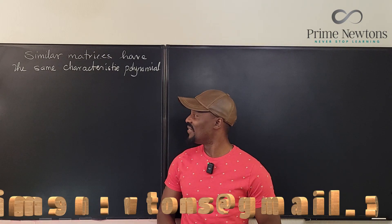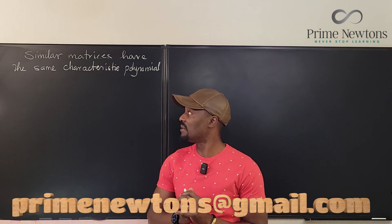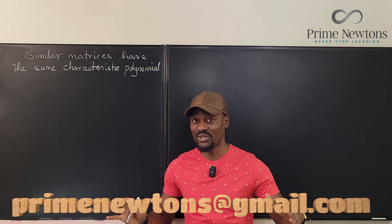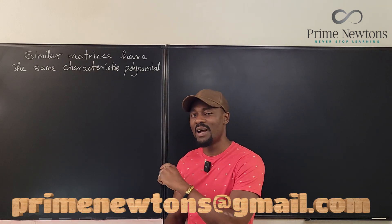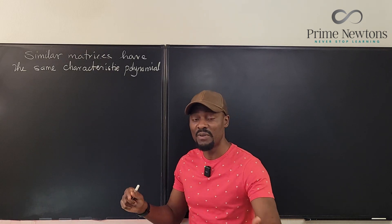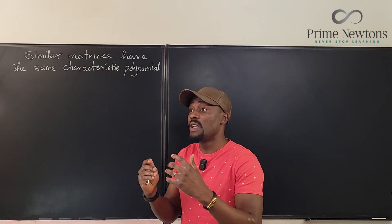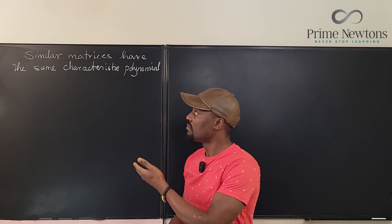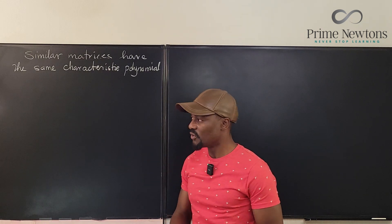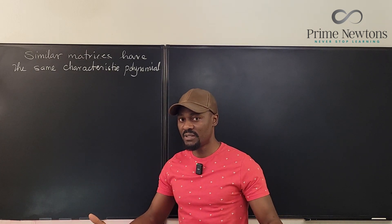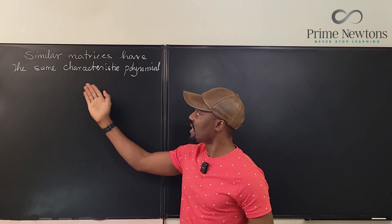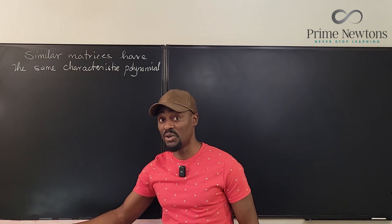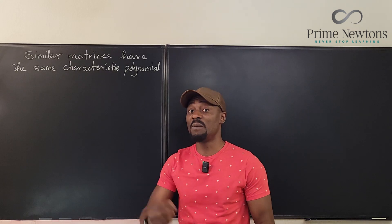Welcome to another video. This problem is on linear algebra and it's about similar matrices. My channel has done a lot of number theory and calculus of late, but I just want to touch on linear algebra. This is a very easy proof, but it will stun any student if you're not familiar with it or don't understand all the tricks applicable to linear algebra proofs. If you have similar matrices, you're supposed to show that they have the same characteristic polynomial. To answer this, you must know what the characteristic polynomial is and what similar matrices are.